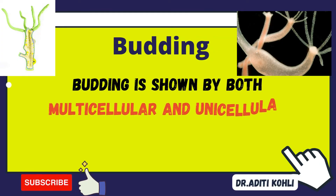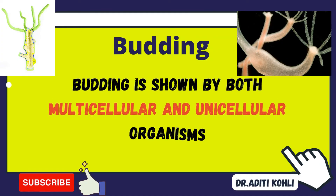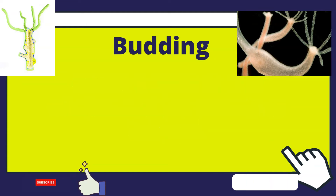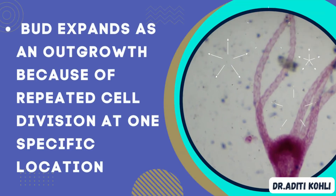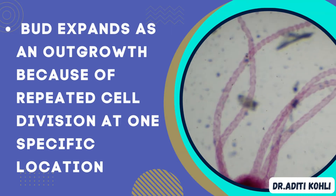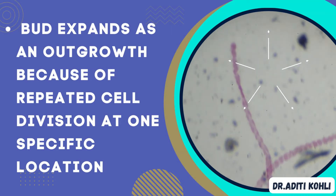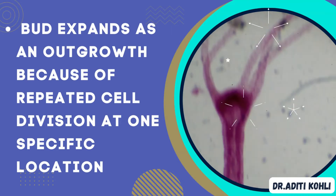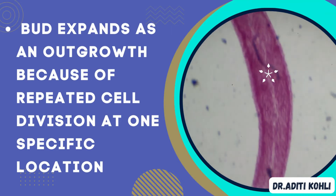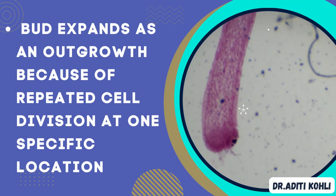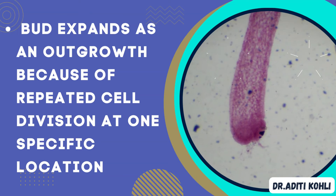Budding is shown by both multicellular and unicellular organisms. A bud expands as an outgrowth because of repeated cell division at one specific location.